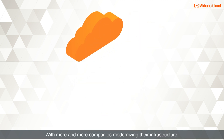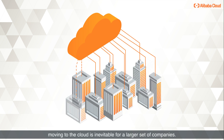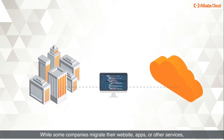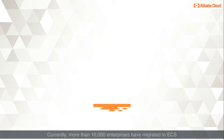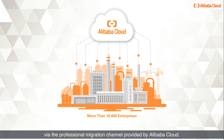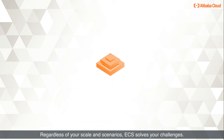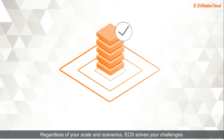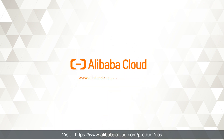Migration: With more and more companies modernizing their infrastructure, moving to the cloud is inevitable. Whether migrating a website, apps, or other services, or moving all core businesses to the cloud, more than 10,000 enterprises have already migrated to ECS via Alibaba Cloud's professional migration channel. Regardless of your scale and scenarios, ECS solves your challenges. Onboard to Alibaba Cloud ECS for cloud migration today. Visit alibabacloud.com/product/ECS.